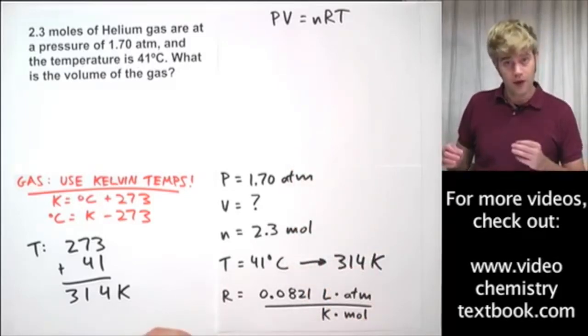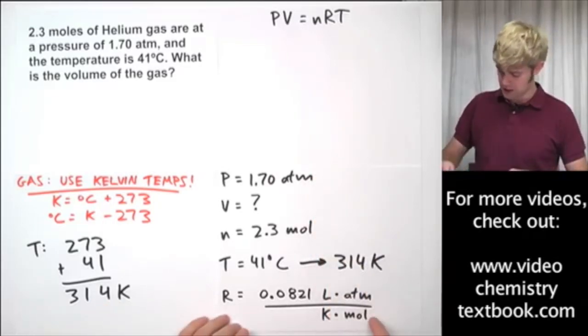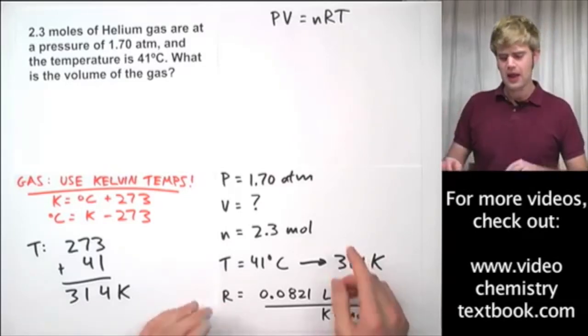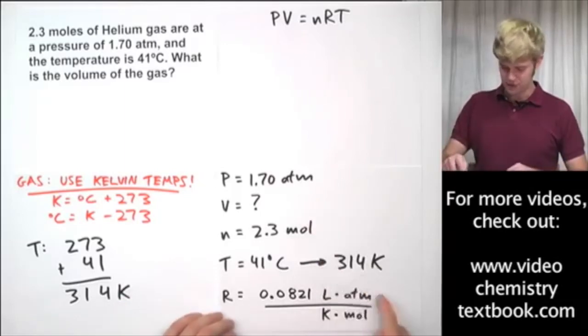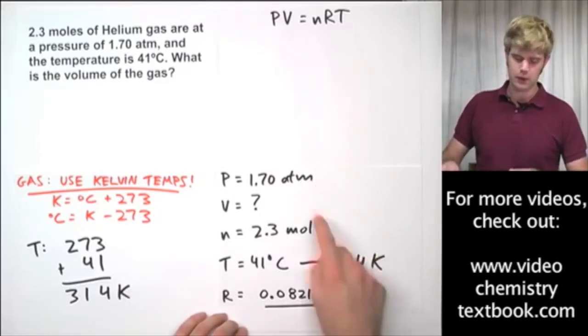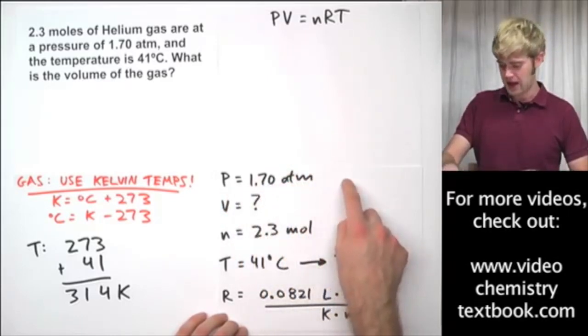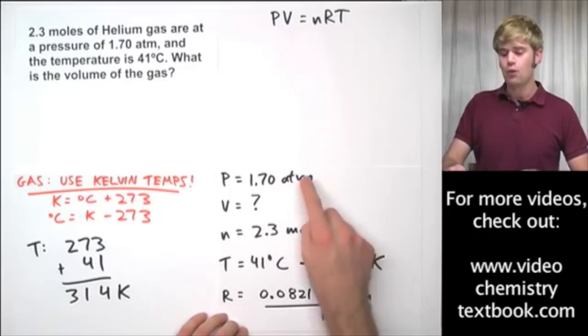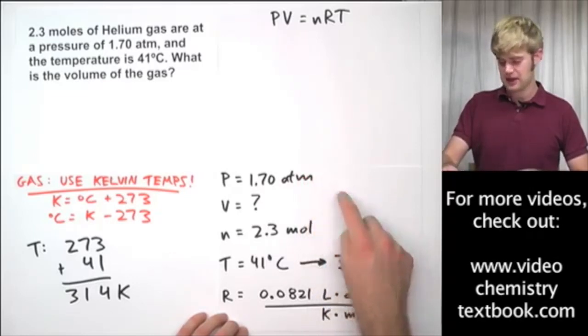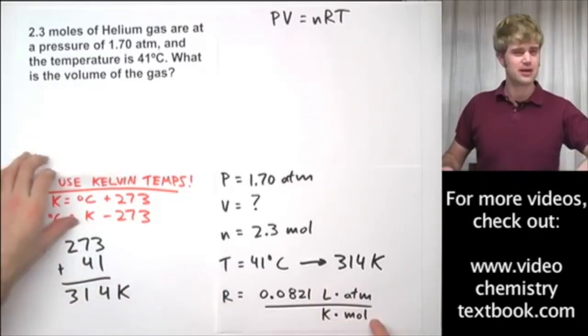Now is a good time to look at these variables up here and compare their units with the units on R. We want them to be the same. Okay, so atms up here, atms down here. That's good. Moles here, moles there. Kelvin there, Kelvin there. All right, if any of the units were different than what they are on R, we would have to convert them so that they were equal. So for example, if pressure were 1.70 kPa, and we have atms down here, we'd have to convert kPa into atmosphere so that it would be the same as the units on R. All right, keep that in mind for the future.